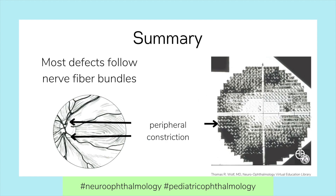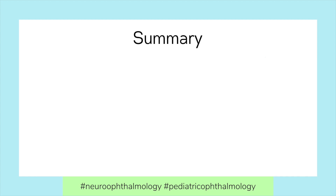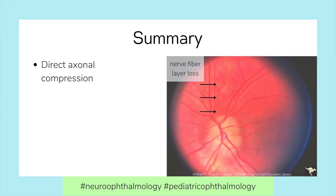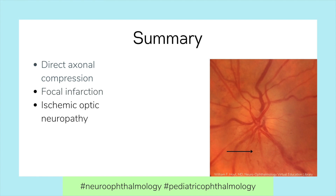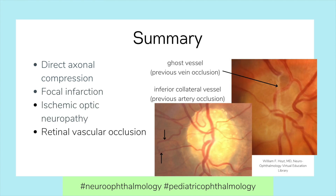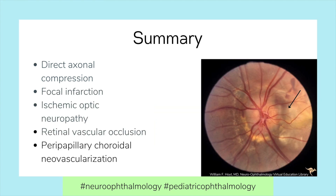Over time, the visual field may progress to complete peripheral constriction, but visual acuity is rarely affected. Five causes of visual loss in Optic Disc Drusen include direct axonal compression, focal infarction, ischemic optic neuropathy, retinovascular occlusion, and peripapillary choroidal neovascularization.